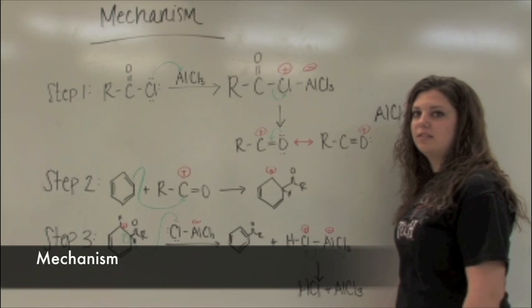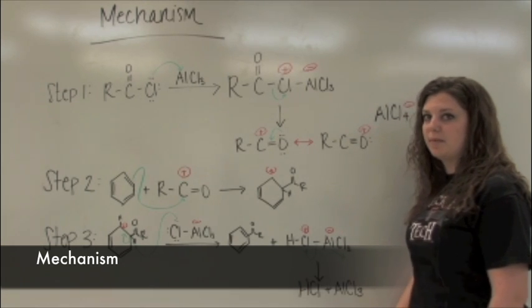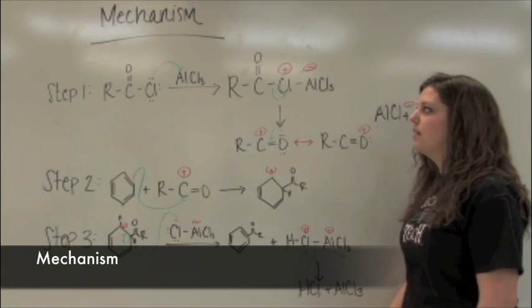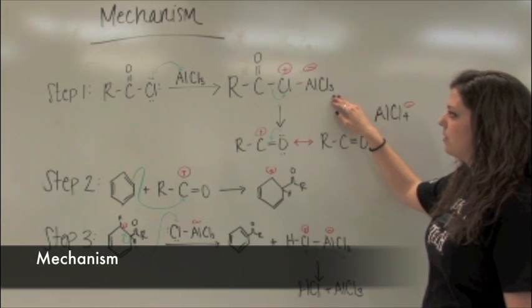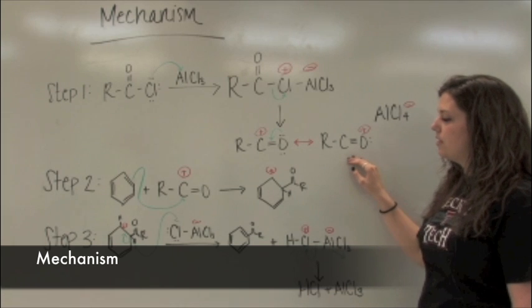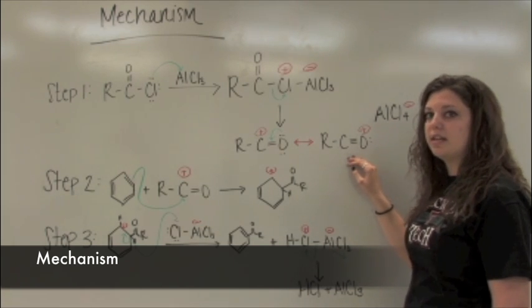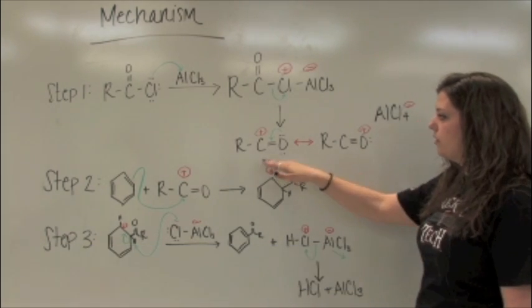The Friedel-Crafts acylation general mechanism can be broken down into three major steps. The acyl chloride attacks the Lewis acid to produce the Lewis acid-Lewis base complex, which dissociates into the key electrophilic acylium ion. Shown here are the two resonance structures.